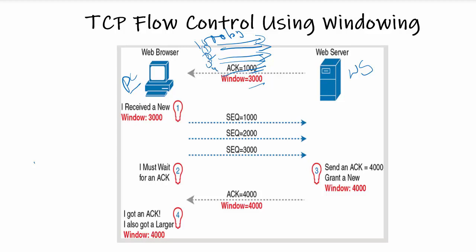The web server gives an acknowledgement of 1000 based on the TCP sequence numbers, and also informs the PC that it has a window size of only 3000 bytes. The PC notes this window size and sends three TCP segments — one, two, and three — of 1000 bytes each, totaling 3000 bytes. The web server then sends an acknowledgement of 4000 based on sequence number 3000, and gives a new window size of 4000.